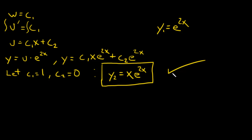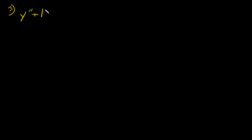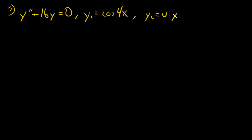Now let's knock out number 3. Number 3 is very similar to number 5 except it uses normal trig functions instead of hyperbolic. We have y double prime plus 16y equals 0, and we're given that y sub 1 is equal to cosine 4x. Yes, you already know what the second solution has to be, but let's go through the math. We start by saying y2 is equal to some function u times y1, which gives y2 equals u times cosine 4x.